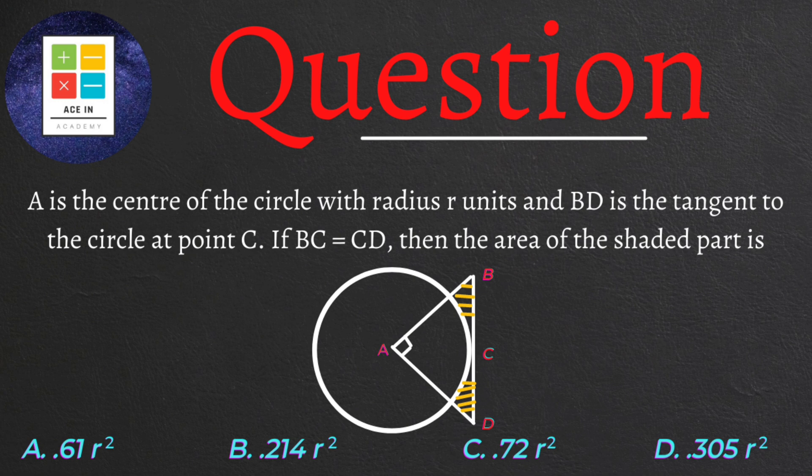We are provided four options: Option A: 0.61 R squared. Option B: 0.214 R squared. Option C: 0.72 R squared. Option D: 0.305 R squared.